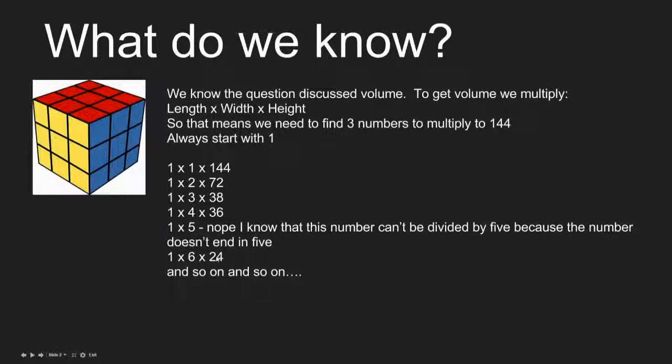This is where you use your divisibility rules. You know that 144 ends in a four, it does not end in a five or zero, so you can't use five. One by six by 24, and so on until you get 10, because all you needed are 10, and that would answer question a.